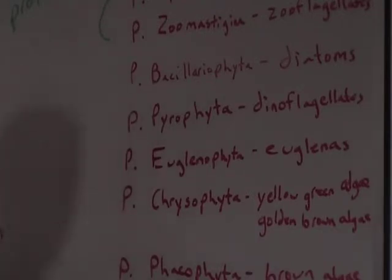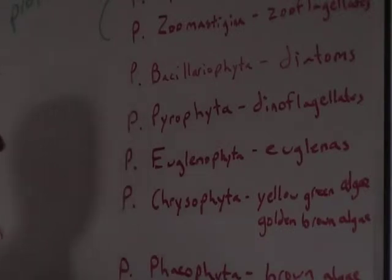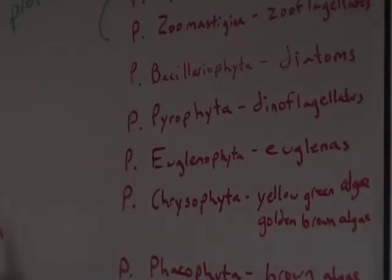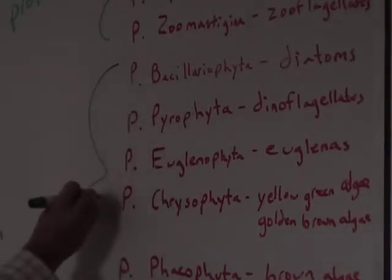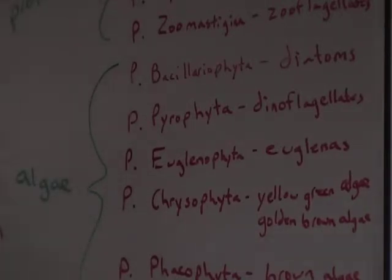Chlorophyta is green algae. Are those all the plant-like ones? All these are plant-like. These are called algae. Protozoans are animal-like protists. Algae are plant-like protists — yes, because they can do photosynthesis.